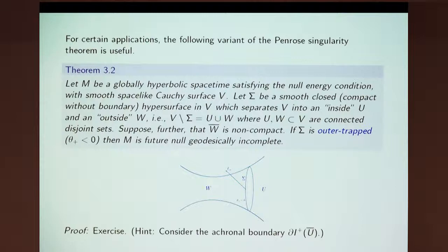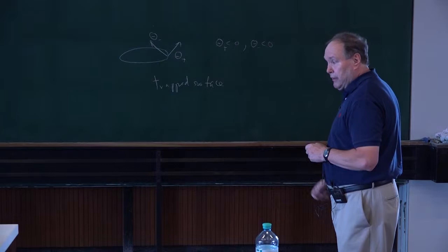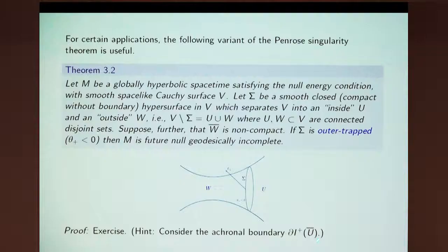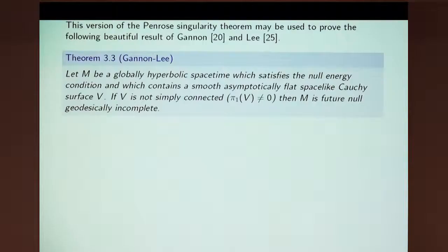In this proof, you want to consider this achronal boundary. You will argue, somewhat similarly to the Penrose singularity theorem, that this thing is non-compact. And then you can run an argument that there will be some inward pointing null normal geodesic that's incomplete from sigma. So there's this variation of the Penrose singularity theorem.